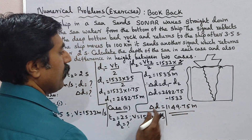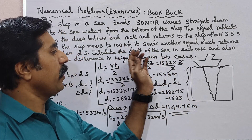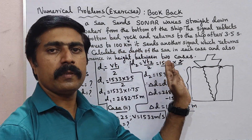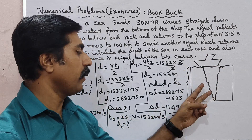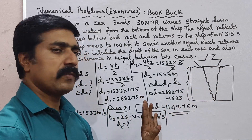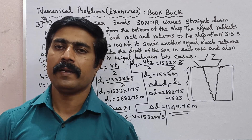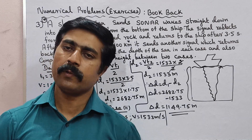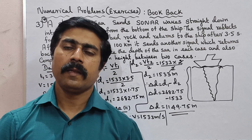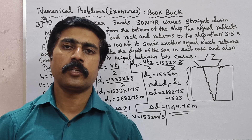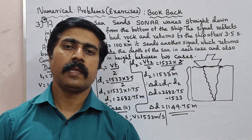This is the depth at the beginning position of the ship and at 100 km away. The difference in height between the two cases is 1149.75 meters. Very very simple — important problem. Diagrams we can draw. Practice and share. All the best. Thank you.